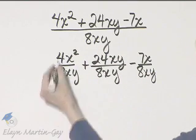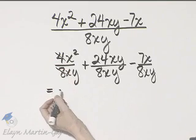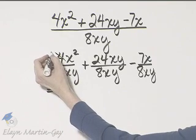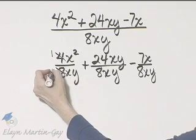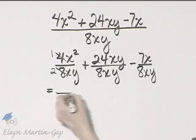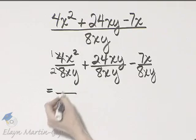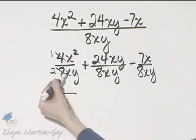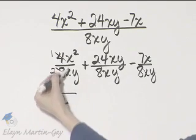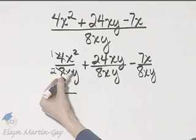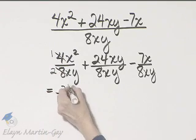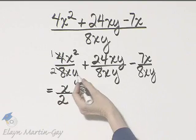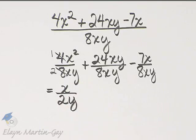Now we just simplify. 4 and 8 have a common factor of 4. 4 divided by 4 is 1, 8 divided by 4 is 2. So I have a 1 in the numerator and I have a 2 in the denominator. Now look at your x's, remember we subtract exponents, that will be x raised to the power of 2 minus 1, or x to the power of 1, and then we have a y in the denominator. So we simplified that term.